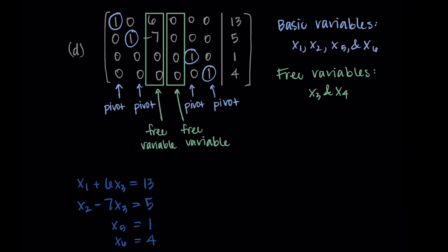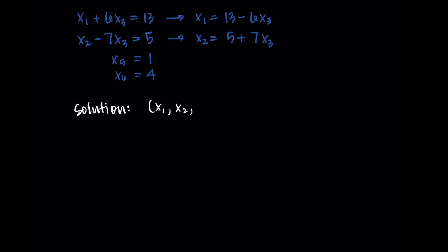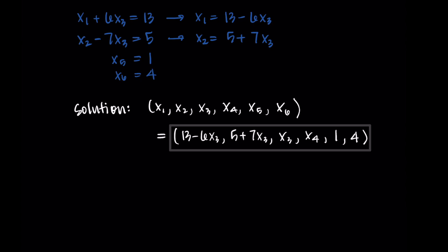The fifth and sixth variables are already determined. For the first two, I solve in terms of x3: x1 equals 13 minus 6x3, and x2 equals 5 plus 7x3. Writing the full solution (x1, x2, x3, x4, x5, x6): I replace x1 with 13 minus 6x3, x2 with 5 plus 7x3, leave x3 and x4 as free, and set x5 to 1 and x6 to 4.